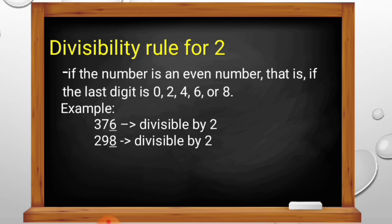Another example is 298. The last digit of 298 is 8, and 8 is an even number. Therefore, 298 is divisible by 2.